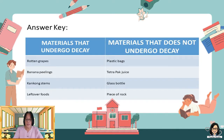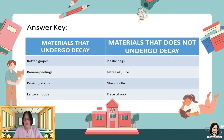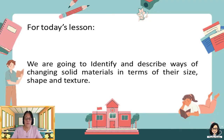Materials that undergo decay — if you got the perfect score, you're an excellent learner. Congratulations! For our today's lesson, we're going to identify and describe ways of changing solid materials in terms of their size, shape, and texture.